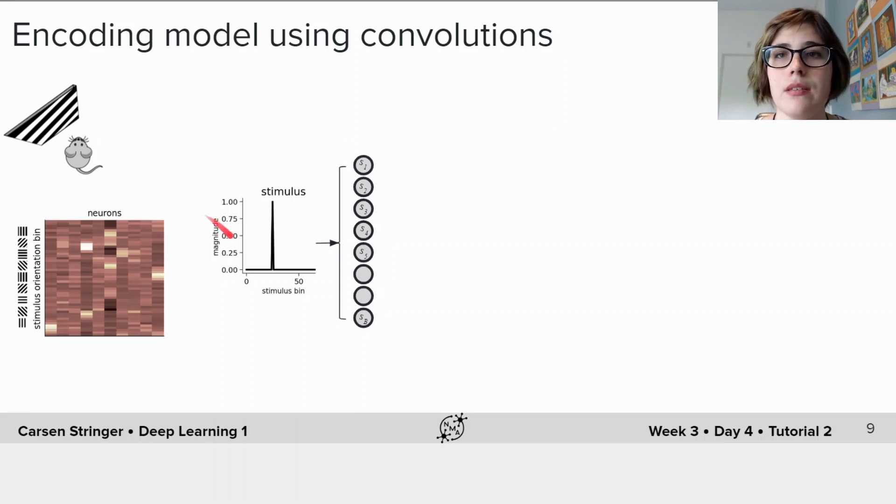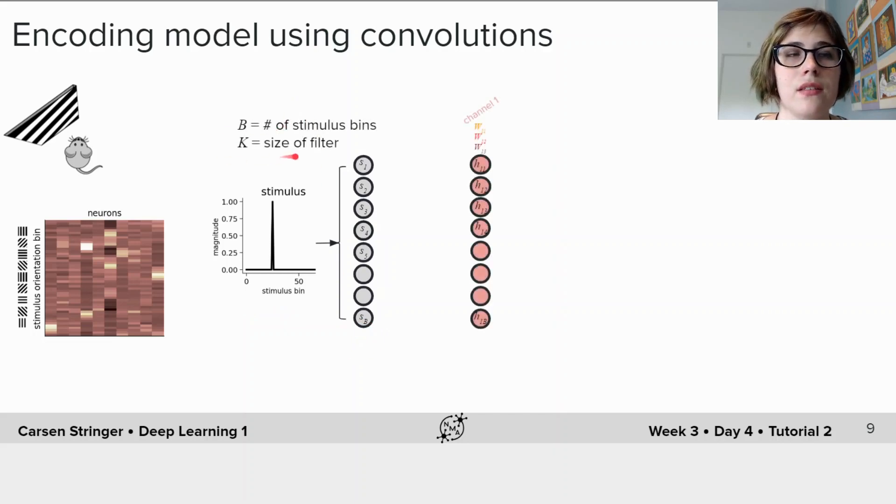We input the stimulus which in this case has a dimensionality b, and we use a filter size of k where k is 3, so it has three weights w11, w12, and w13. So now in this layer of this network where we have this first channel of our convolutional layer, we're going to compute the activations.